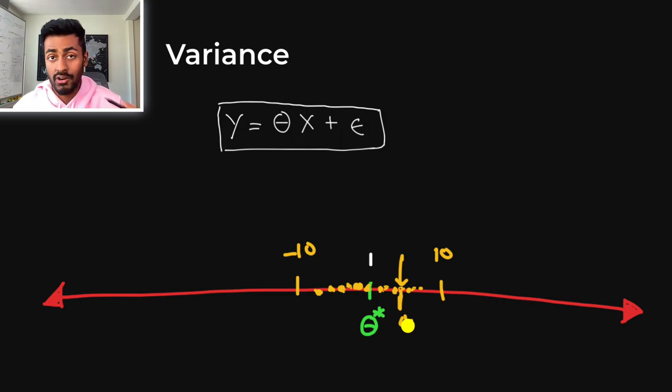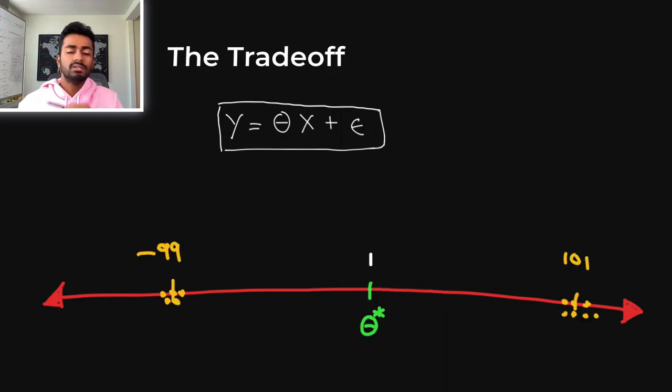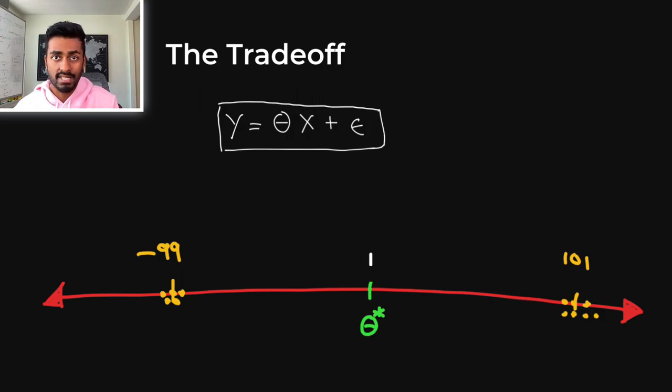And so a good model is one that has a very low bias, as well as a very low variance. And so in the most ideal world, the model would have zero variance and zero bias. And we would strive to have a model with as low a variance and low of a bias as we possibly can.